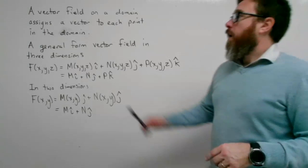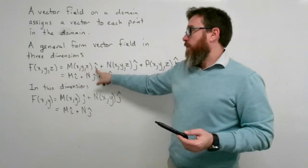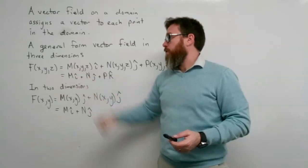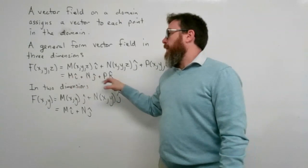A general form vector field in three dimensions is given by this formula. Our vector field F defined on x, y, z is M(x,y,z)i + N(x,y,z)j + P(x,y,z)k. It defines a function for each coordinate — M for the x-components, N for the y-components, and P for the z-components. We can just write Mi + Nj + Pk, knowing that M, N, and P are functions defined on this domain.